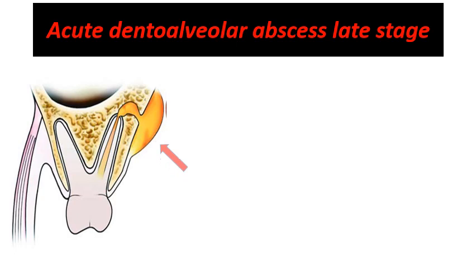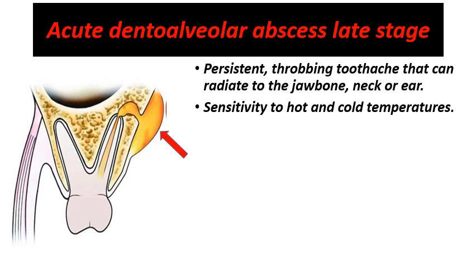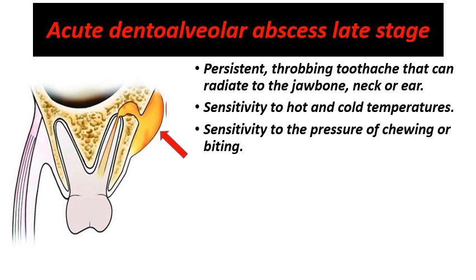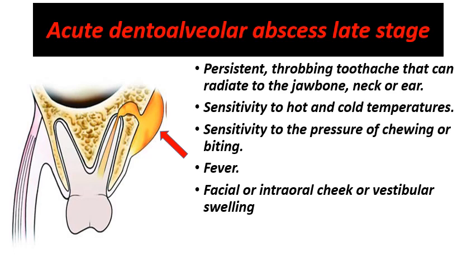At the late stage, the abscess has successfully perforated the alveolar bone and exits as a subperiosteal abscess, a soft tissue abscess in the vestibule, or an abscess under the external skin surface. The persistent throbbing pain referral to the jaw, neck, and ear decreases dramatically compared to the early stage. Sensitivity to hot and cold and to chewing remains but is less intense. The patient may complain of fever, facial, intraoral cheek, or vestibular swelling, and there may be cervical lymphadenopathy with swollen, tender lymph nodes.